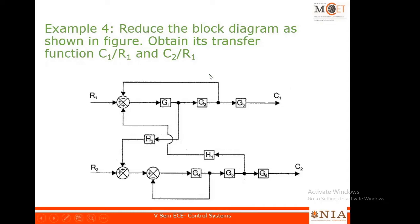So when they ask you C1/R1, it means R2 should be kept to zero. C1/R1 means I should keep the R2 signal to zero — when I give zero there, something is getting added with zero, so I can remove that input and directly connect the line.